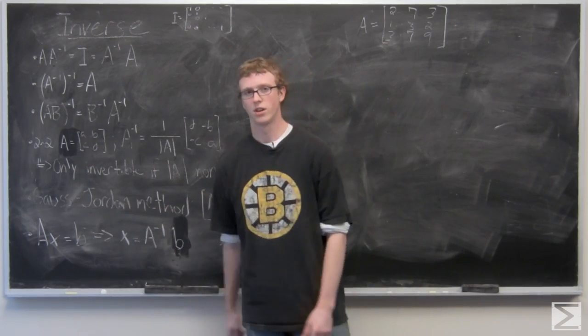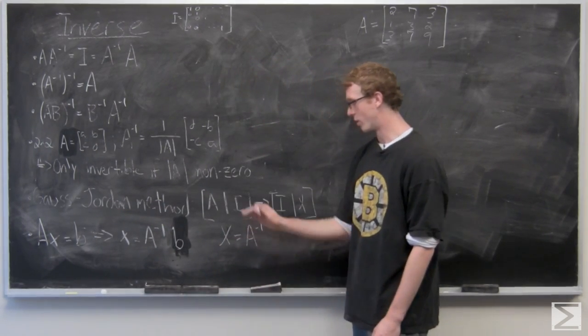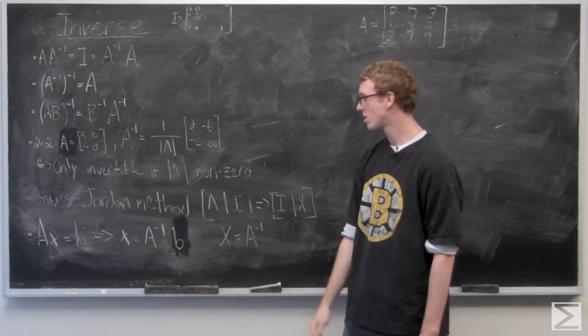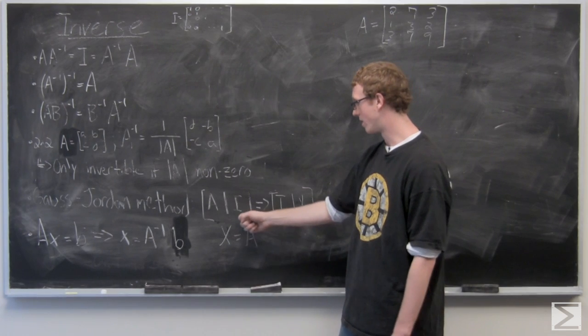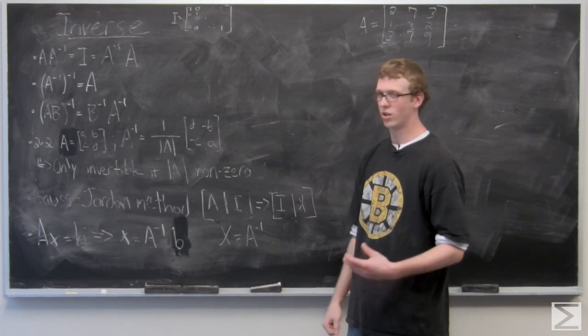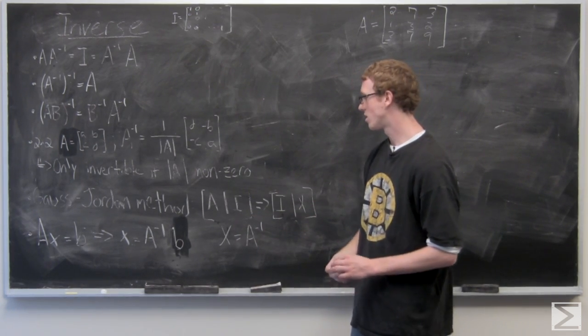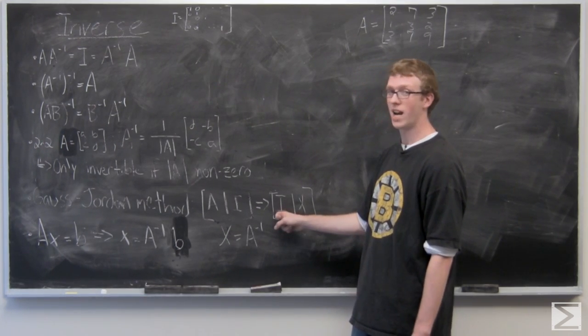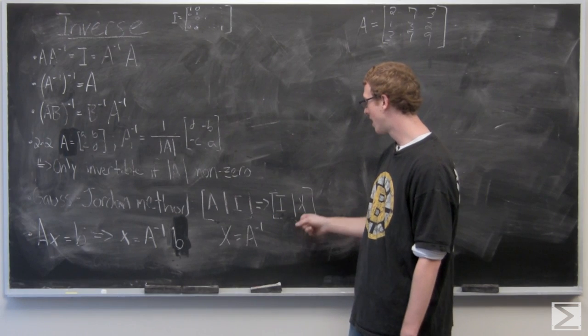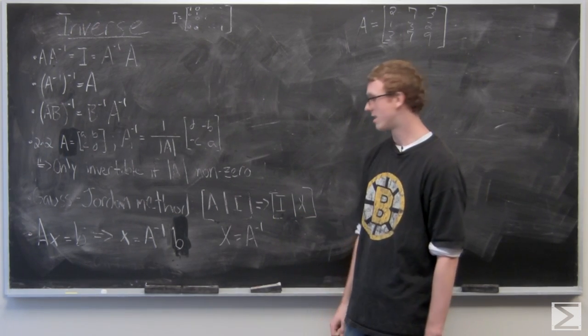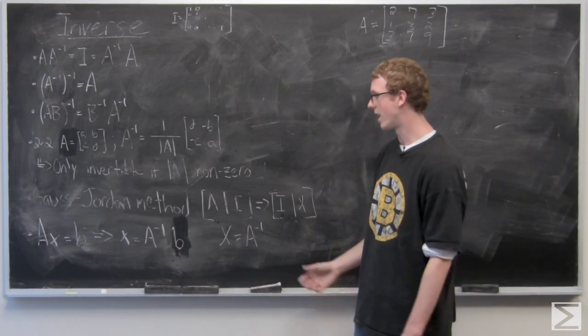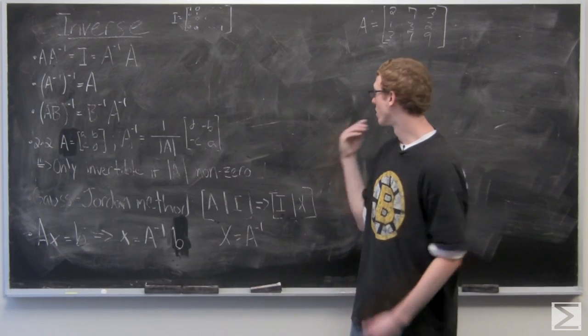We're going to use what's called the Gauss-Jordan method where you set up a matrix on the left and then a line in the middle and then you have the identity matrix on the right. So on the right, it's just all zeros. And then you can use elementary row operations, which we looked at earlier, to get to the identity matrix on the left side and x on the right side. And your new matrix x on that right side is going to be the inverse of a. It's a very interesting method. We'll take a look at that in one second.